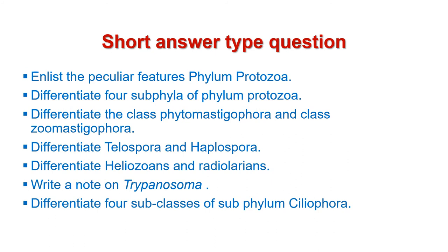The second category of questions are short answer type questions which you have to answer in a single paragraph. First question: list the peculiar features of phylum protozoa. Next: differentiate the four subphyla of phylum protozoa.